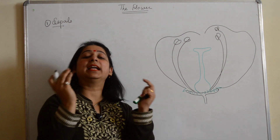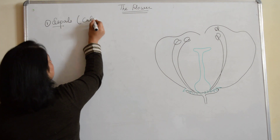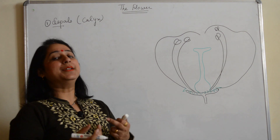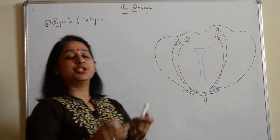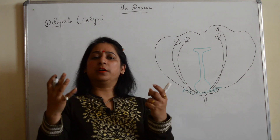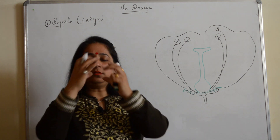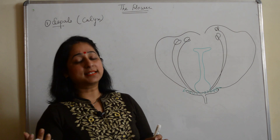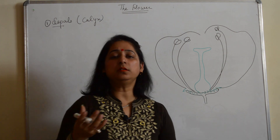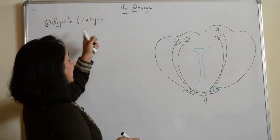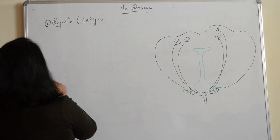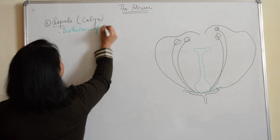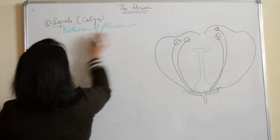A single unit is called a sepal, and the collection is known as calyx. The collection of sepals is known as calyx. It is the outermost green whorl and its main function is to protect the flower in the bud state. It covers the bud — you must have seen buds with a green-colored structure over them. When that opens up, those parts go down — those are the calyx, or sepals. Their function is protection of the flower in bud state.